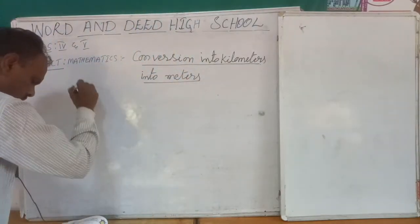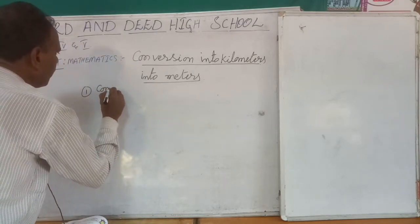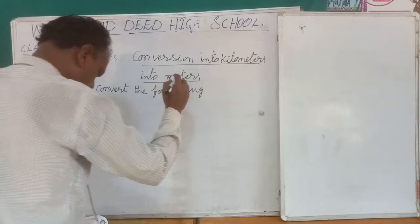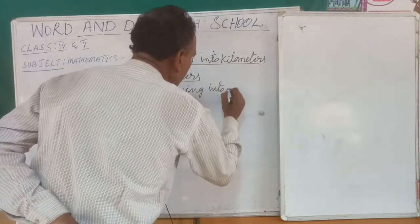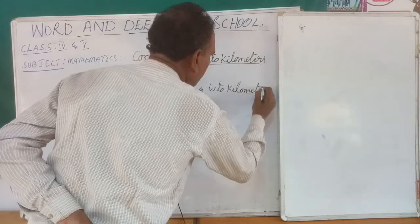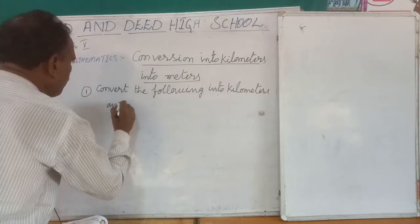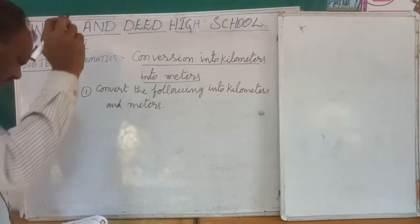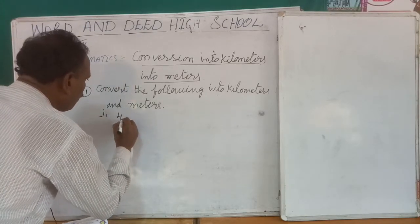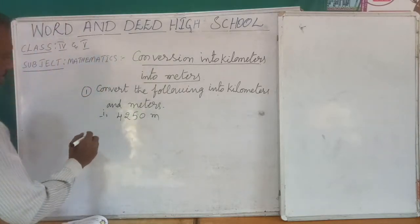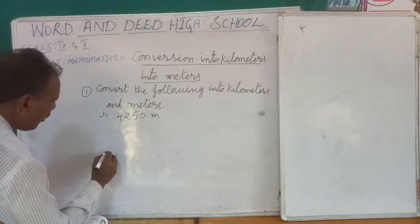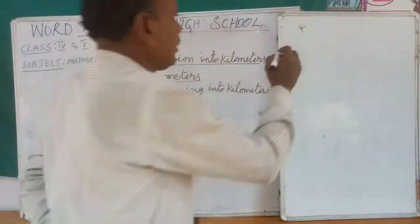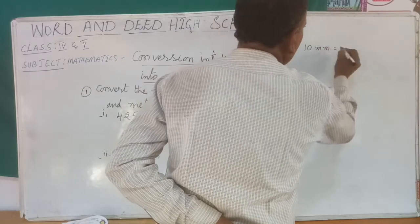Take an example. Convert the following into kilometers and meters. Point number one: 4,250 meters. Point number two: 7,854 meters. We already discussed that 10 millimeters equal to 1 centimeter.